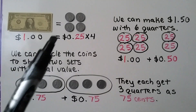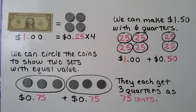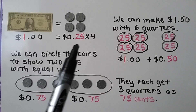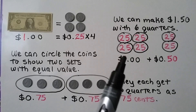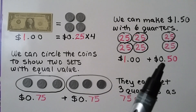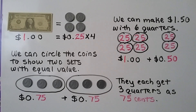One dollar is equal to four quarters. Twenty-five cents times four is equal to one dollar. So we can make one dollar and fifty cents with six quarters — four quarters would be one dollar, and two quarters would be the fifty cents.